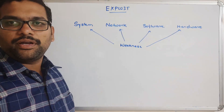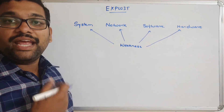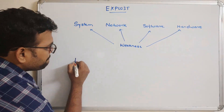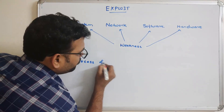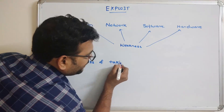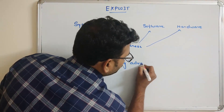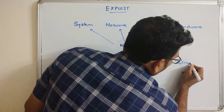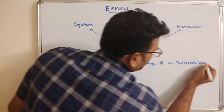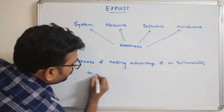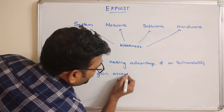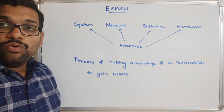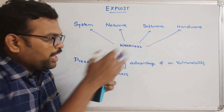The hacker will gain access of the system, network, software, or hardware. This process is called an exploit. So taking advantage to gain access through vulnerabilities is called an exploit. Once there is a vulnerability, there might be a chance of getting that access.